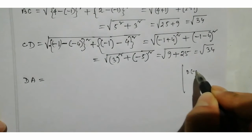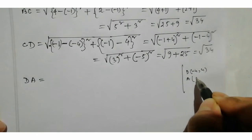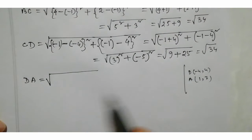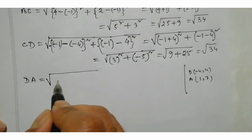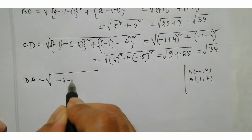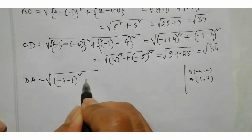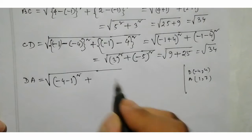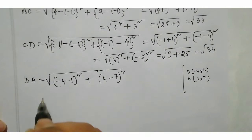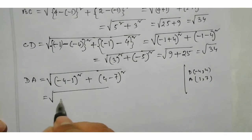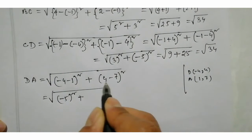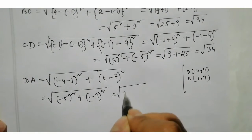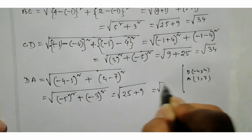So I will calculate DA: D is going to be minus 4, and A is going to be (1,7). First: 2 minus 4, then 1 squared, plus 4 minus 7 squared. So 4 minus 4 plus 4 minus 7: minus 3 squared equals 25 plus 9 equals 34. So DA equals root 34.